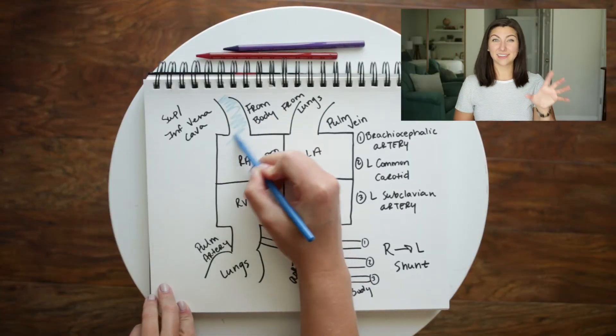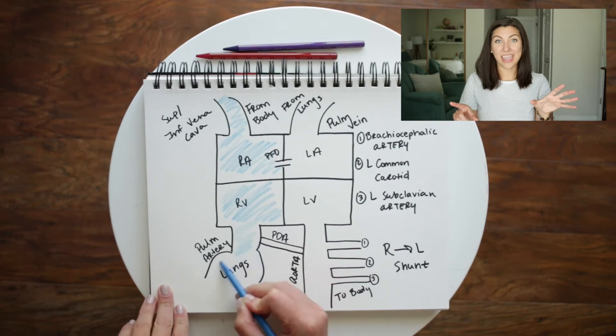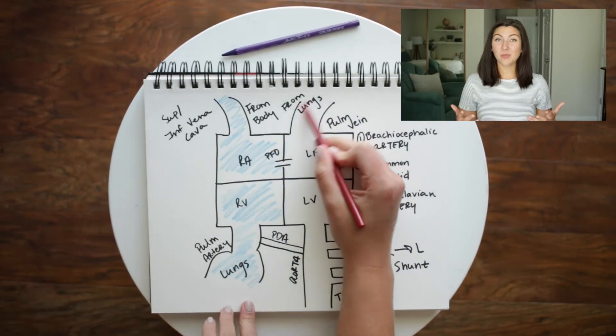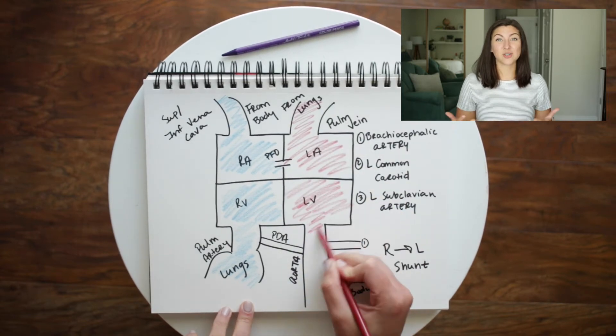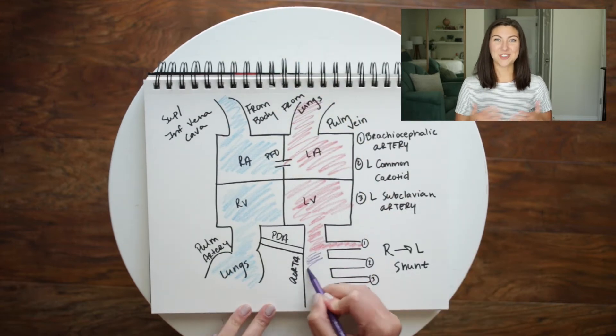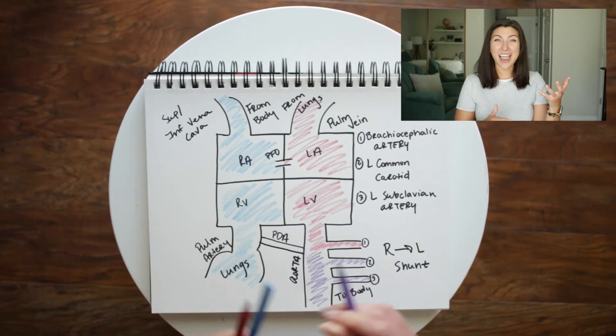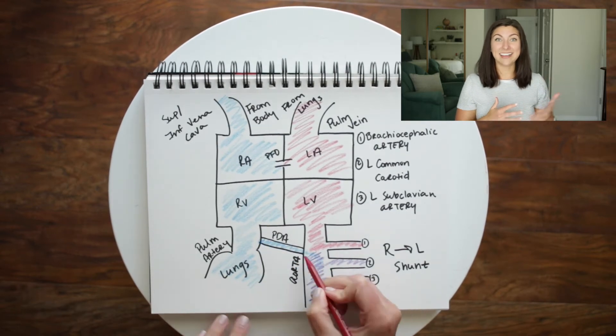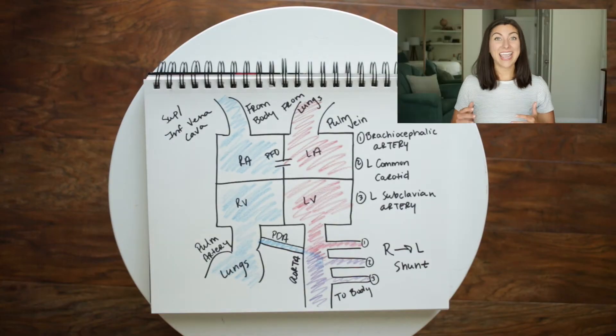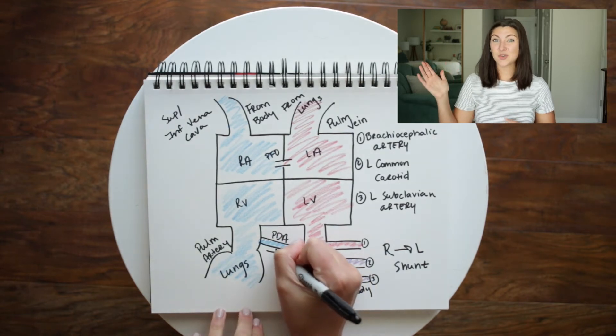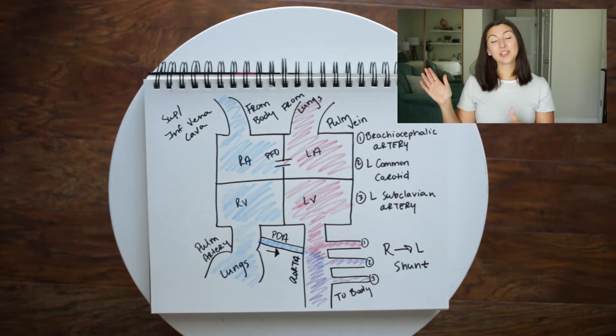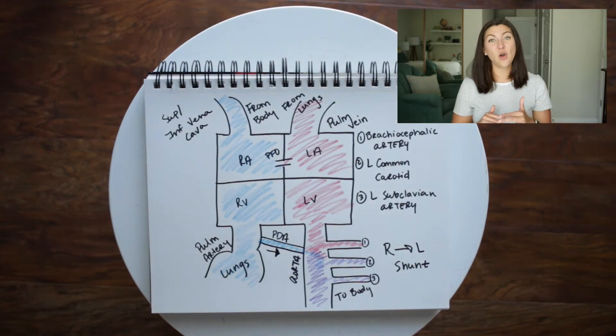Since blood flow is dependent on pressures, when pressures are really high in the lungs, blood is forced back through that pathway — which was normal in utero. This is a problem when the baby is already born because the placenta is not present to provide oxygenated blood. The lungs are now responsible for oxygenation, and if the pressure is so high that blood can't flow in, this causes problems. As blood moves right to left across the PDA, there is mixing of oxygenated and deoxygenated blood below the PDA — that's why you see a higher saturation on the right hand versus below the PDA.